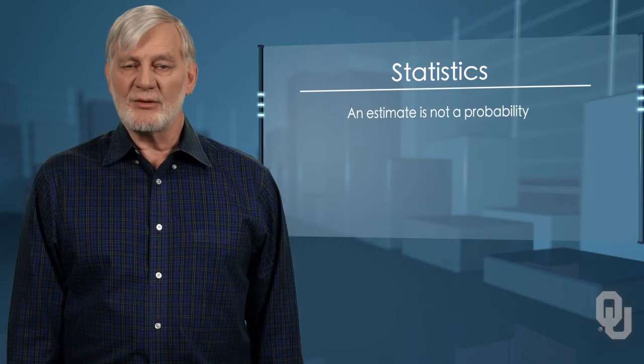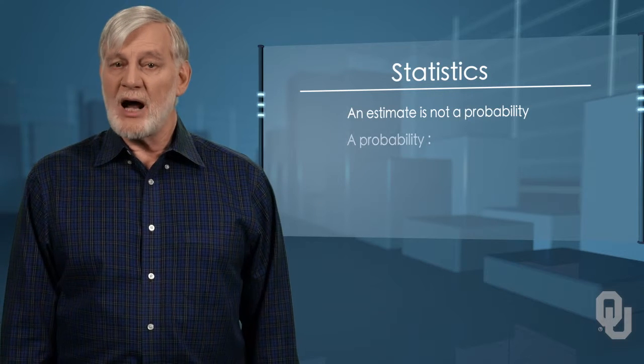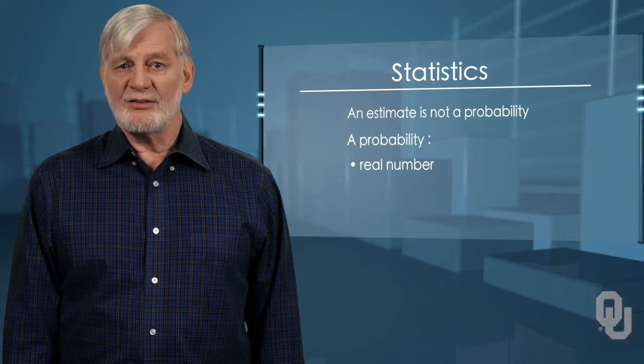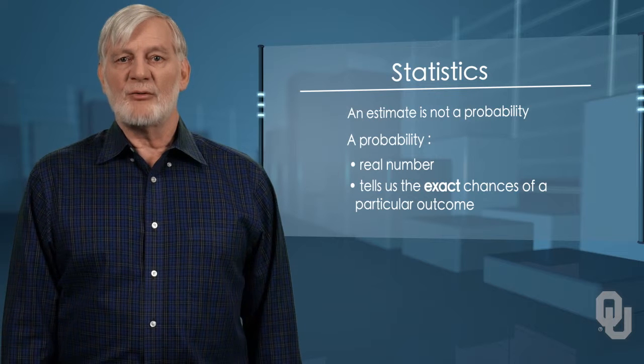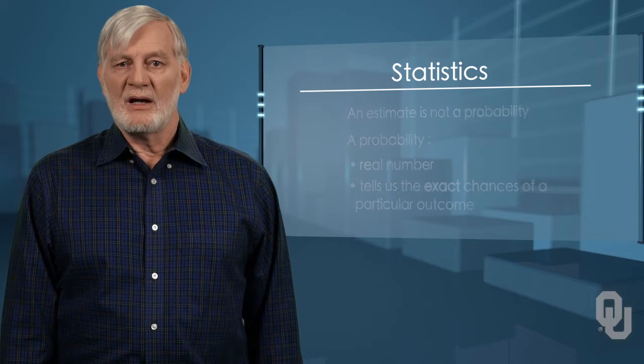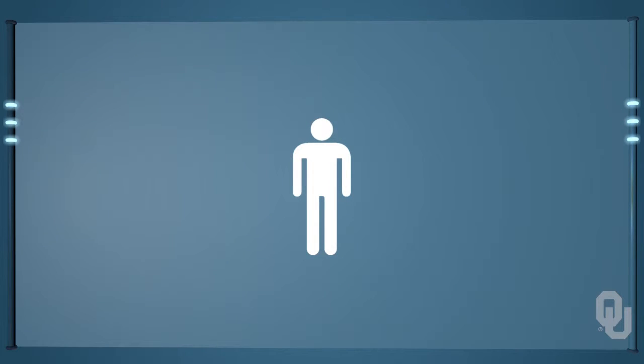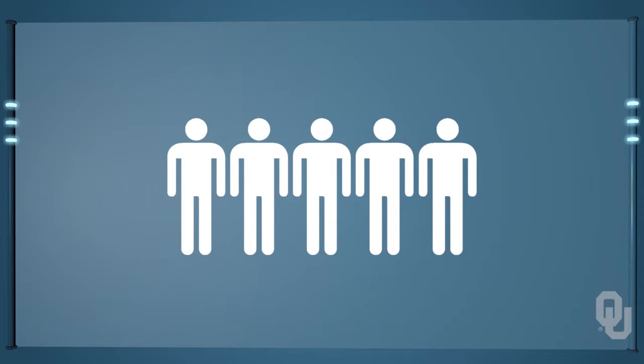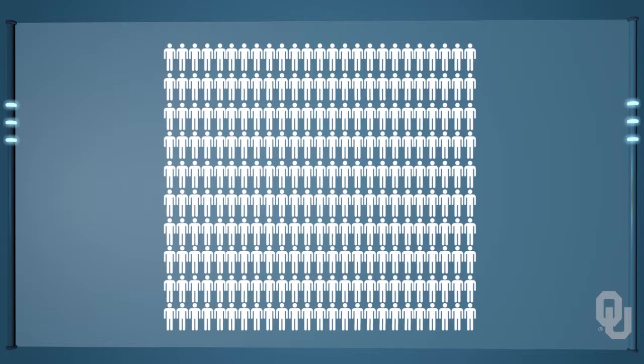With that information, we will make an estimate of the true population proportion of voters who favor the bond issue. This will be an estimate, and an estimate is not a probability. A probability is a real number. It tells us the exact chances of a particular outcome. If I know the actual percentage of the total population who favor the bond issue, I can calculate the probability of drawing a supporter if I randomly selected one person. I can also calculate the exact probability of drawing five supporters from a group of 20, or 250 supporters from a group of 300, and so on.